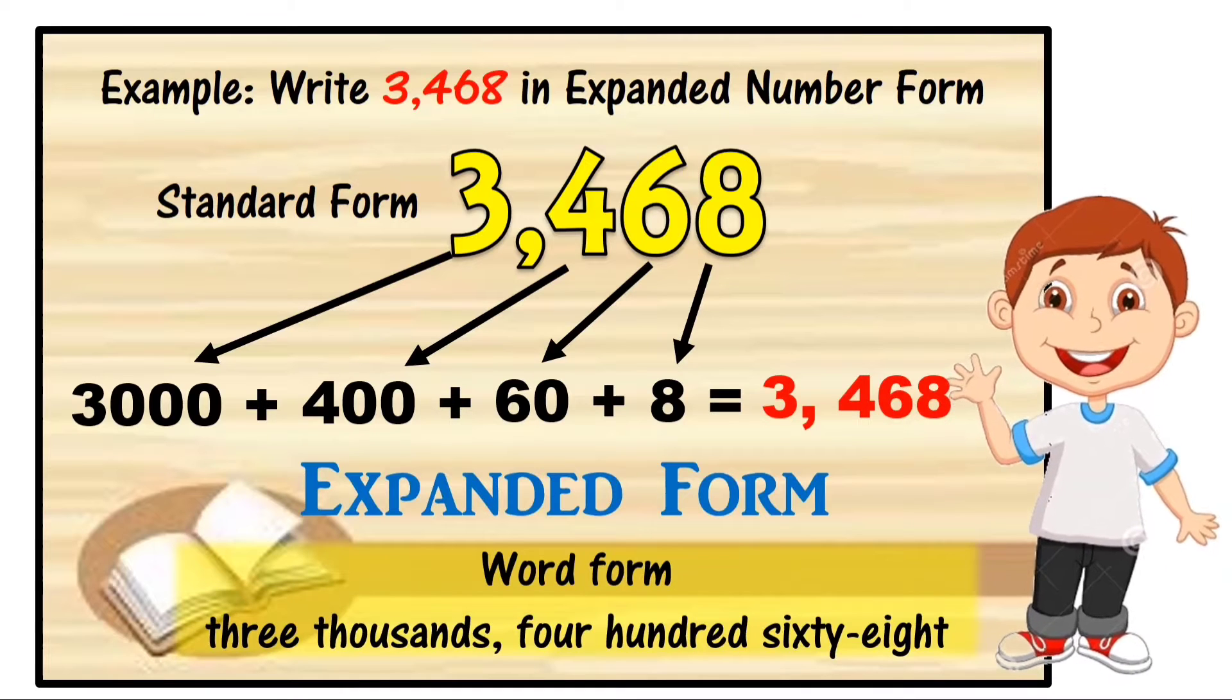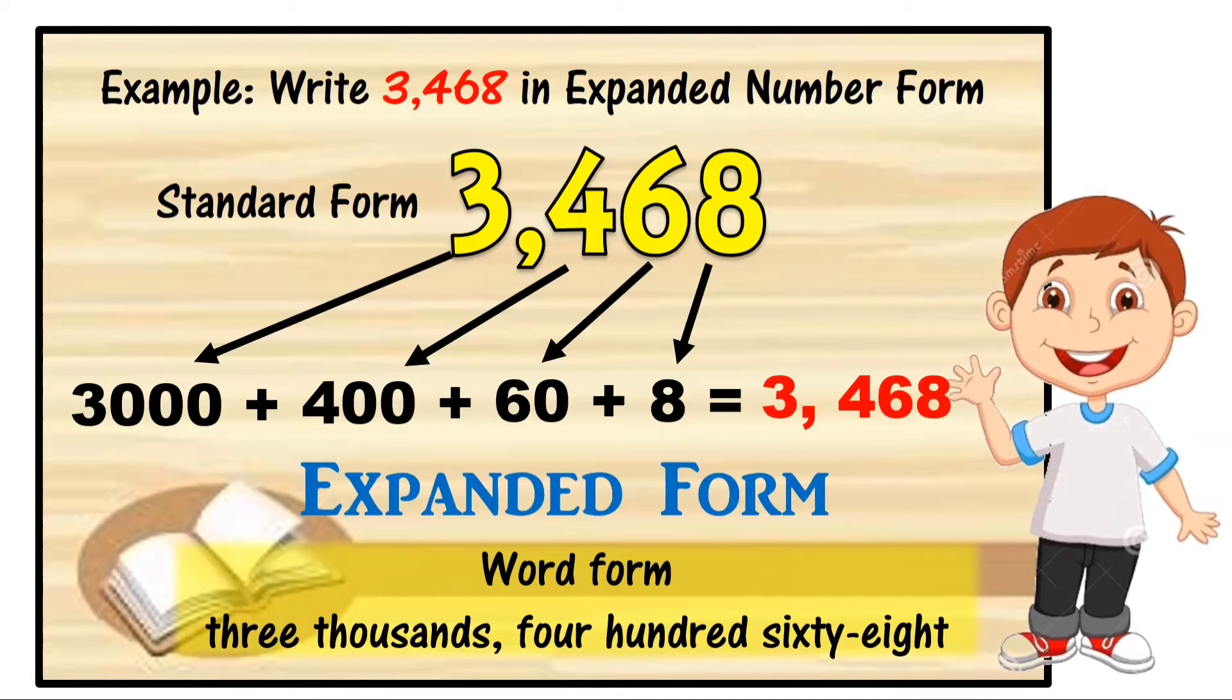In this example, 3,468 is the standard form. It can be expressed as 3,000 plus 400 plus 60 plus 8 equals 3,468.